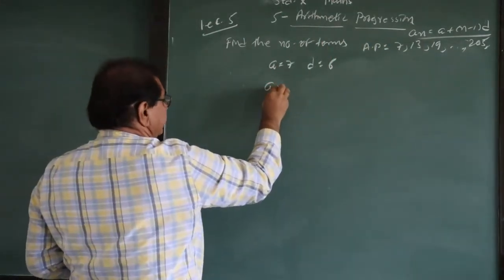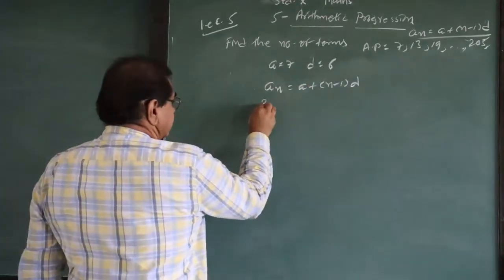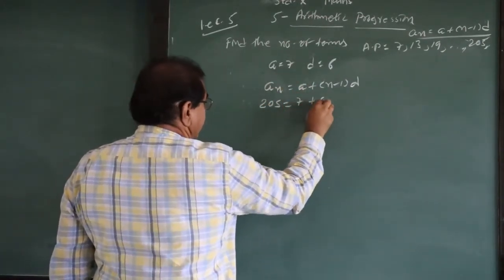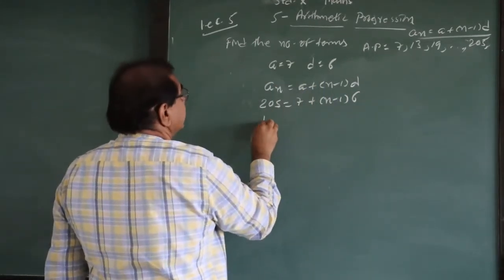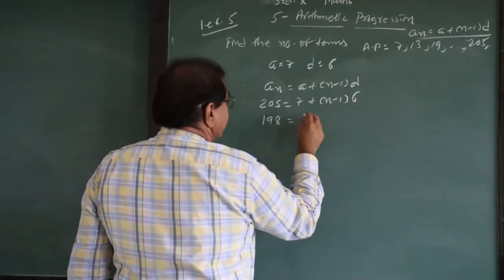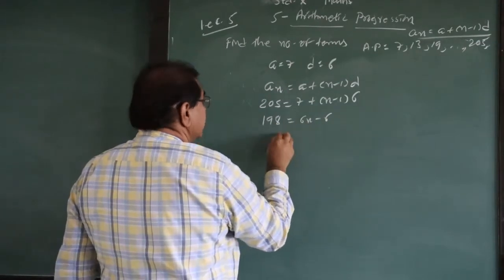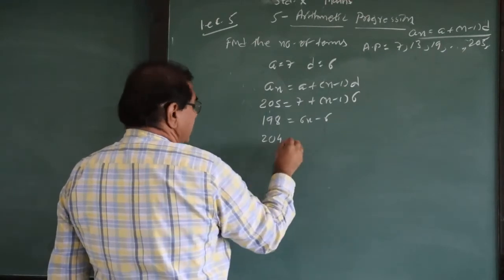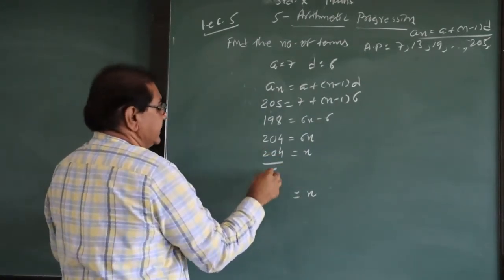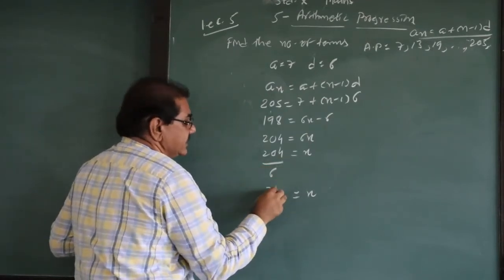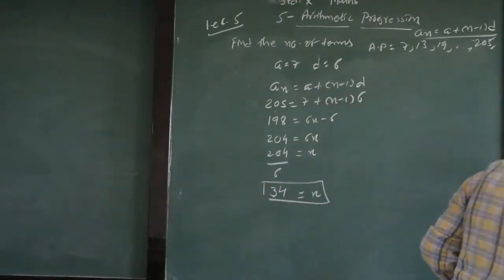Now apply the formula: An = A + (N-1) × D. The last term An is 205, so 205 = 7 + (N-1) × 6. Therefore 205 - 7 = 198 = 6N - 6. Moving -6 to the other side: 198 + 6 = 204 = 6N. So N = 204 ÷ 6 = 34. The number of terms in this AP is 34. Using the formula, you can find such answers very easily.